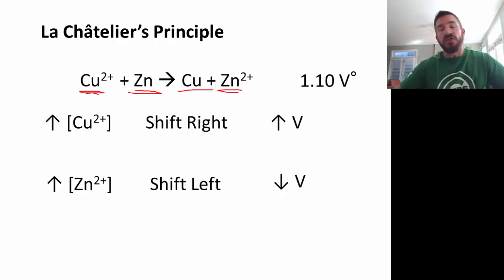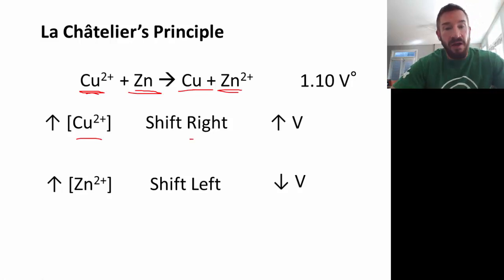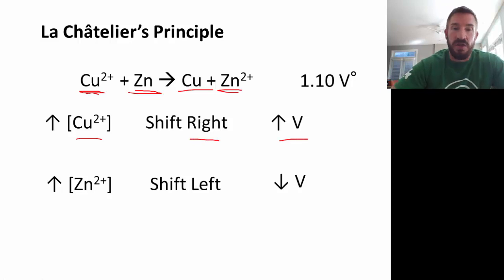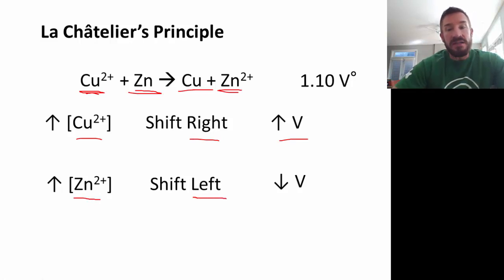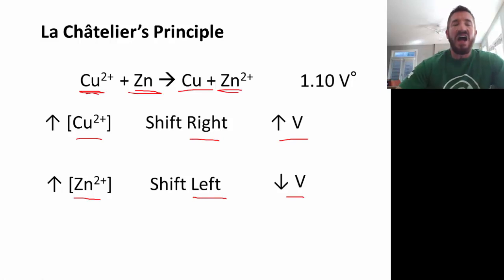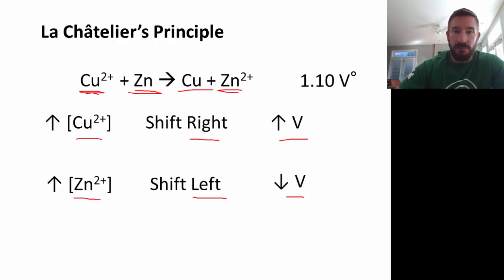There are four possibilities here. Another option is if we increase the concentration of zinc, that's going to shift the reaction to the left, and that's going to decrease the voltage. We could also say if we decrease the concentration of copper, that would shift it to the left, and that would decrease the voltage. Similarly, we could decrease the concentration of zinc — that would shift the reaction to the right and aid in increasing the voltage. That's how Le Chatelier's principle works: look at the reaction and think about how changing concentration affects it.